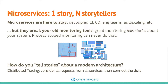Distributed tracing is the way that I think people should be doing storytelling about distributed systems. I think monitoring is really about storytelling — you want the monitoring system to tell you a story about what happened in your system. Tracing is the most literal way of doing that.